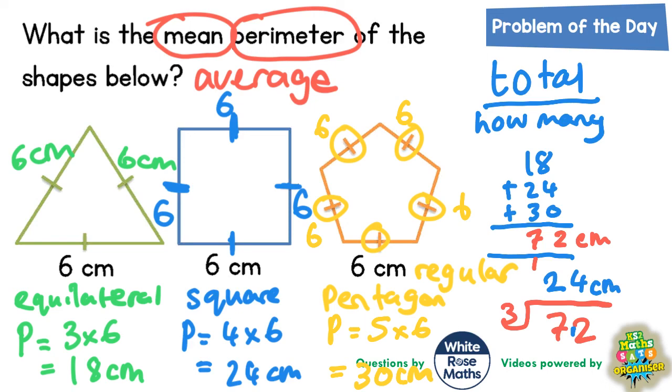The mean perimeter of the shapes below is 24 centimeters. It's not centimeters squared, because we're not talking about area. Remember, area is in centimeters squared. Perimeter is just centimeters.